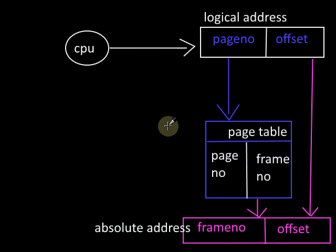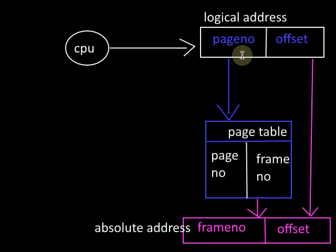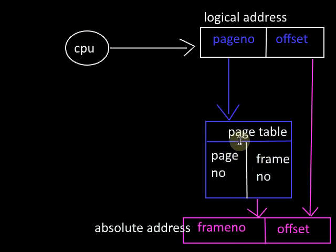As we have seen in the previous video, the page table is the data structure that maps the page number of the process to the frame number within the physical memory. Hence the page table maps the logical address to the physical address. Now, how to implement the page table?